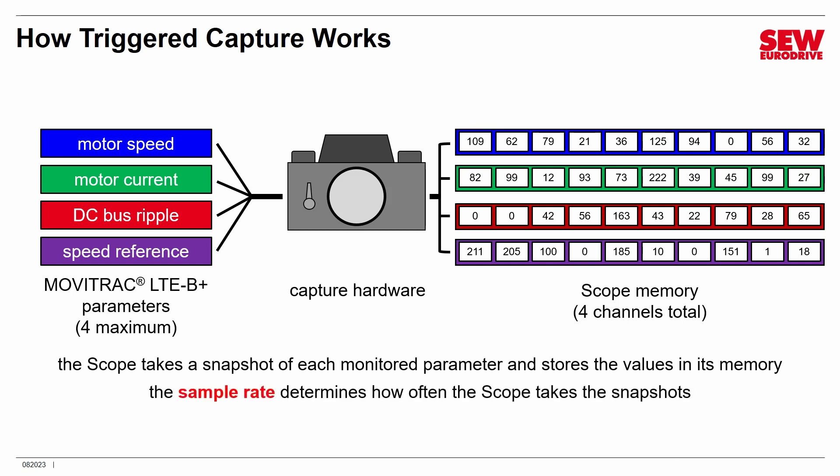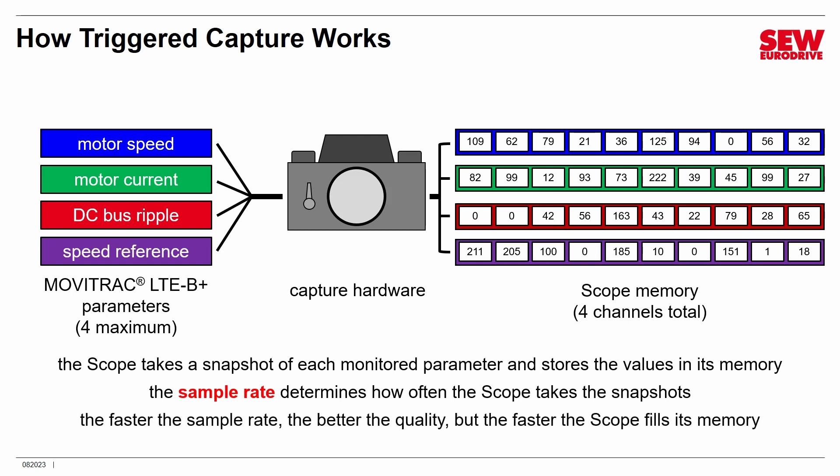There is something called the sample rate that determines how often the scope takes snapshots. You can set it so it's taking snapshots very rapidly — maybe every 10 milliseconds — or you could set it really slow, maybe just a few samples per second. The sample rate will be largely determined by what you're looking for. Here's the key idea: the faster the sample rate, the better the quality of the trace, but also the faster the scope fills its memory. A very fast sample rate will fill up memory quickly but give you a very high-quality trace. A slower sample rate will stretch out the memory longer, but the trace will be poorer. Picking the sample rate is something of an art — you have to often compromise between quality and how long you can capture data.